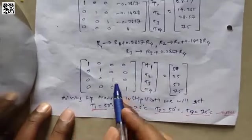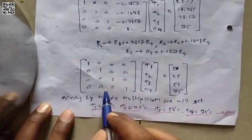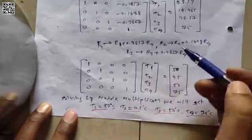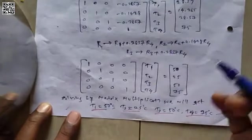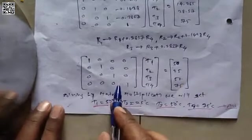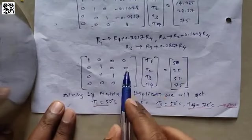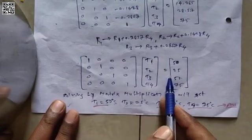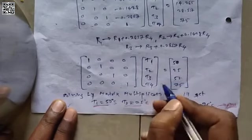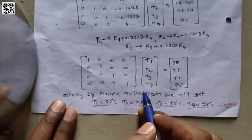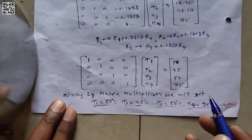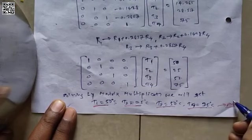With the identity matrix on the left, the right-hand side gives the solution. The same row operations applied to the right-hand side yield values of 50, 25, 50, and 75. Performing the final matrix multiplication, we get: T1 = 50°C, T2 = 25°C, T3 = 50°C, and T4 = 75°C. These are the final answers for the steady-state temperatures at the interior points.